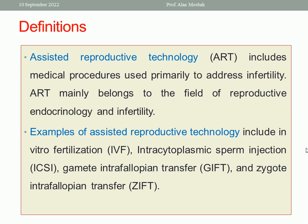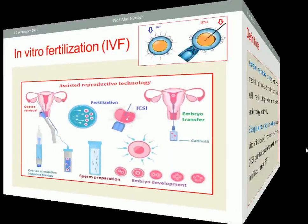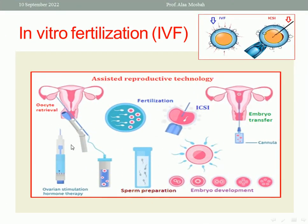Examples of Assisted Reproductive Technology include IVF (in vitro fertilization), ICSI (intracytoplasmic sperm injection), gamete intrafallopian transfer, and zygote intrafallopian transfer. The most common nowadays are ICSI and IVF, while gamete intrafallopian transfer and zygote intrafallopian transfer are regressing significantly. Please look at this picture to understand the different Assisted Reproductive Techniques.